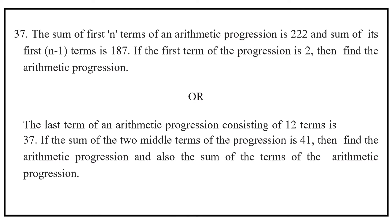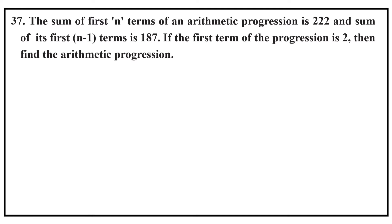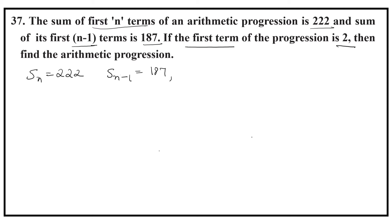Two questions on arithmetic progression are given. The first question: the sum of the first n terms of an arithmetic progression is 222, and the sum of the first n minus 1 terms is 187. The first term is given, that is 2. We have to find the arithmetic progression.